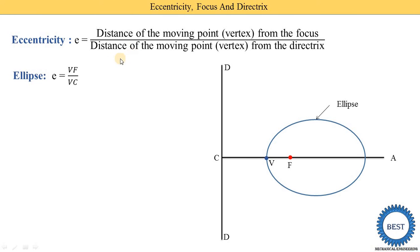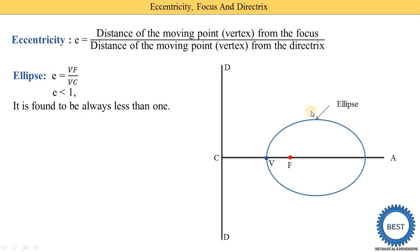For the ellipse, E = VF / VC where VF is the distance of the moving point (vertex) from the focus, and VC is the distance from the vertex to the directrix. VF is smaller and VC is larger. For example, if VF is 2 and VC is 4, then E = 0.5. If VF is 0.9 and VC is 1, then E = 0.9 — always less than 1. So for ellipse, E < 1.